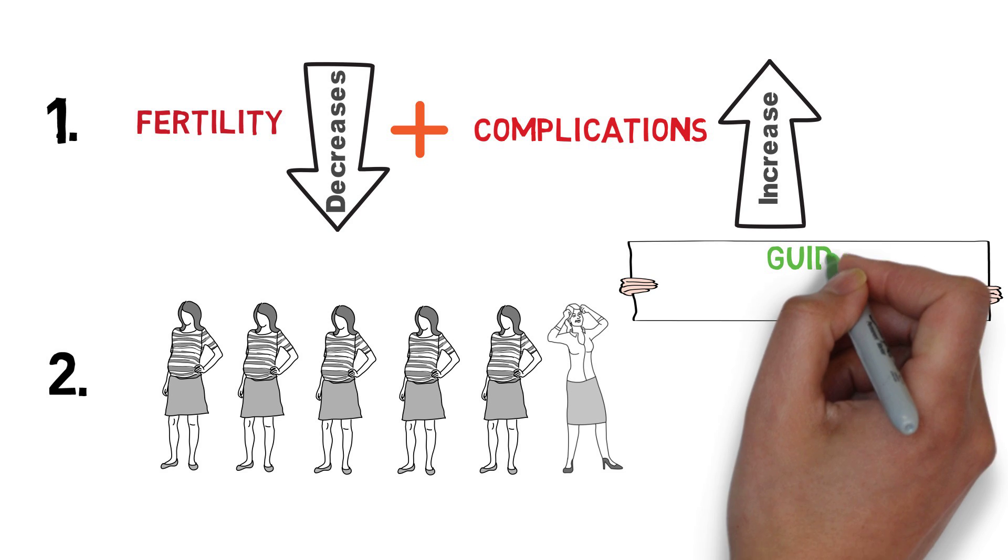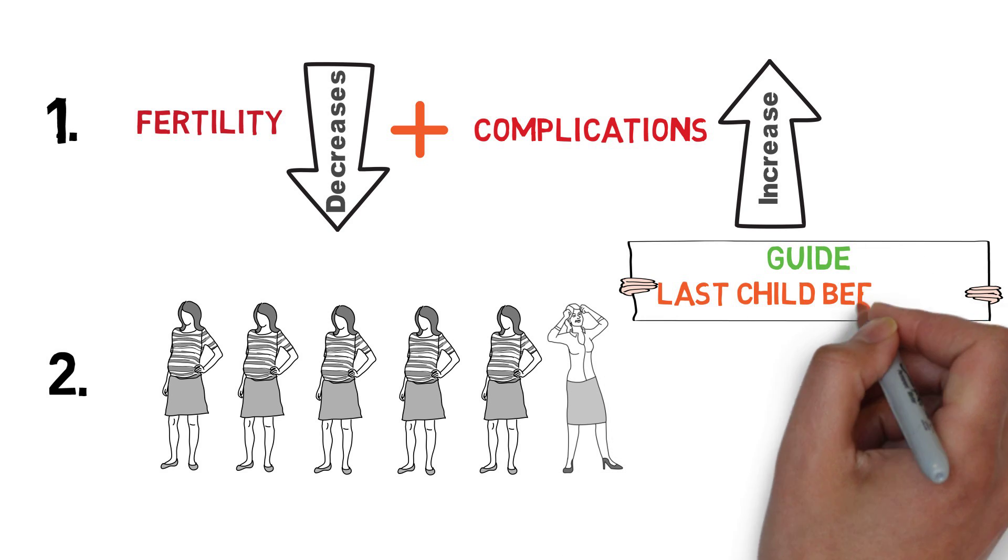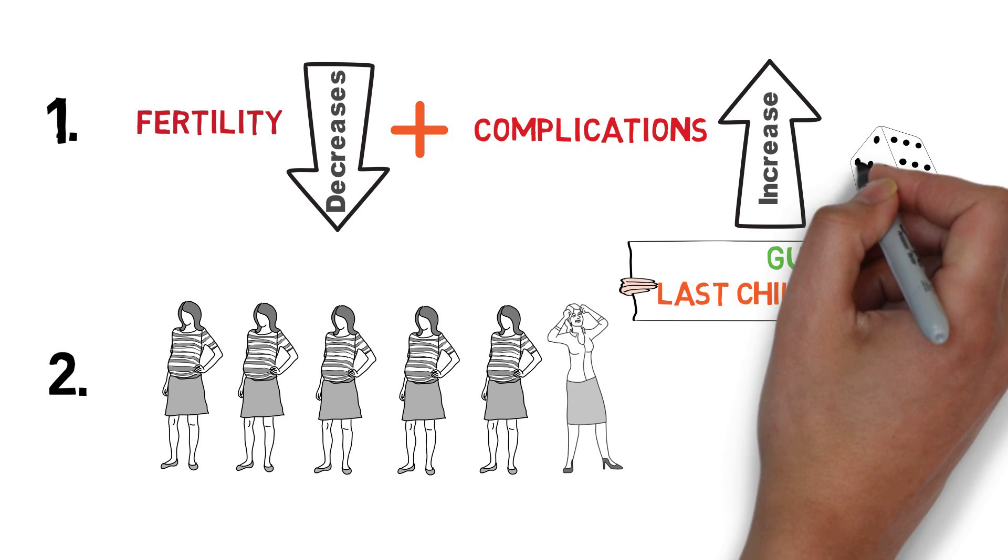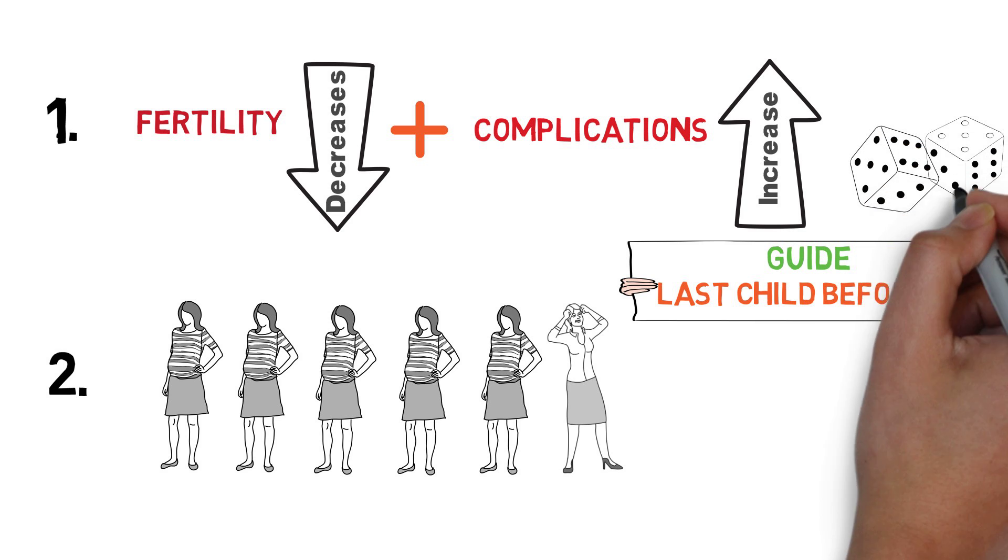As a simple guide, it's recommended to have your last child before the age of 40. After 40, you're rolling a dice. It may work out, or maybe there'll be consequences.